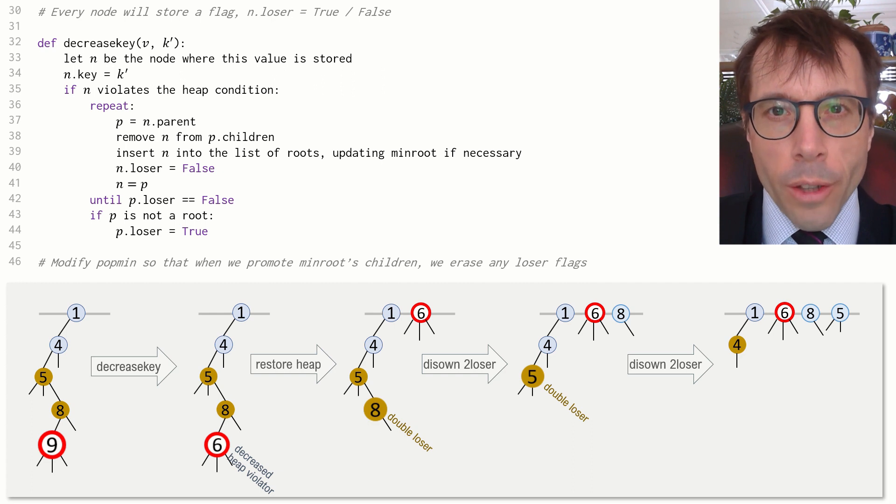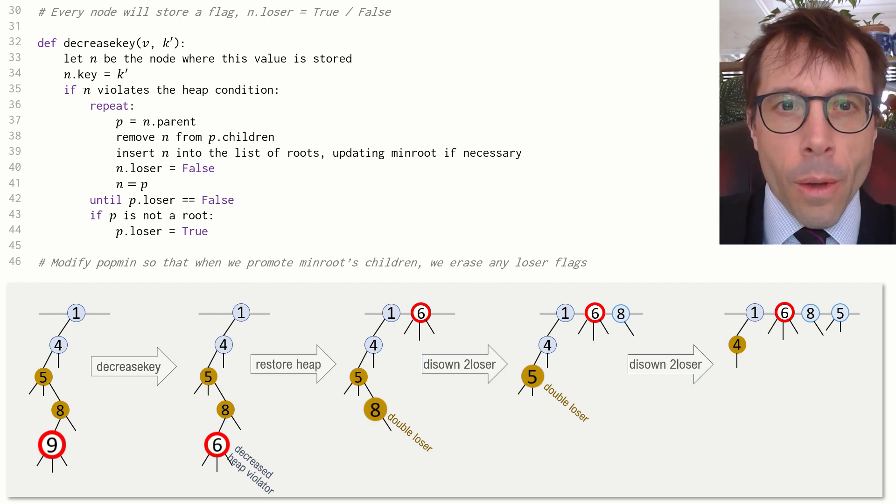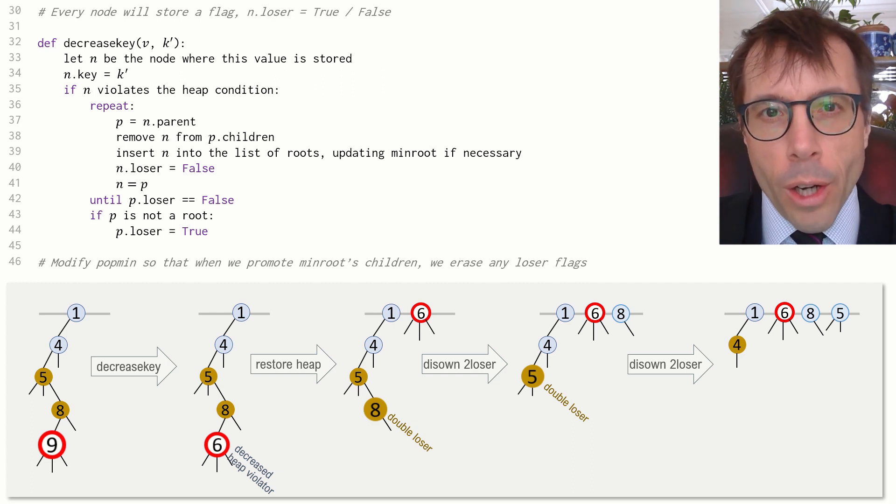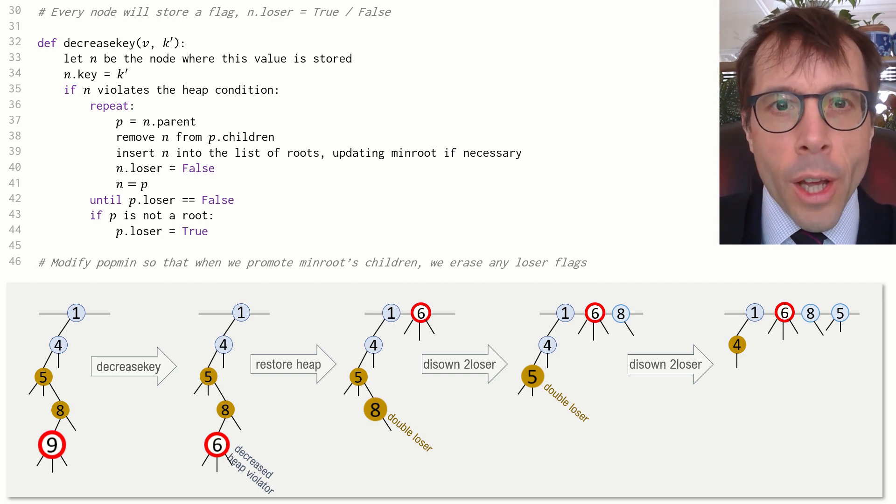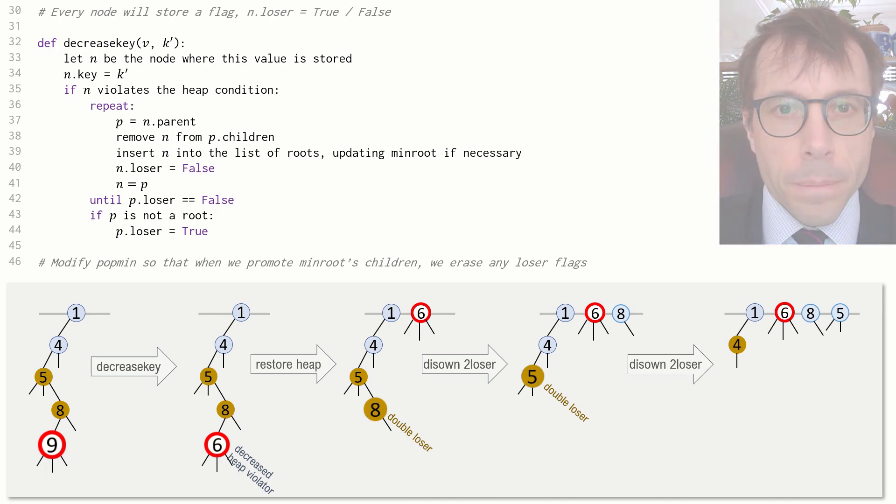It's worth just reiterating the general rule. Nodes in the root list are always marked as non-losers. When we go through this decrease key operation or when we call popmin and extract the min root and then promote its children, any node in the root list will get its loser mark wiped clean. Now this is a whole lot of very finicky rules and the full point of them won't be clear until we get on to do the amortised complexity analysis in the next video.